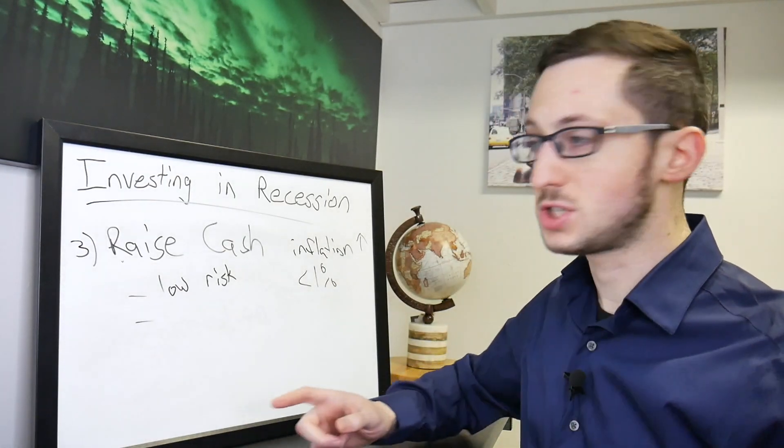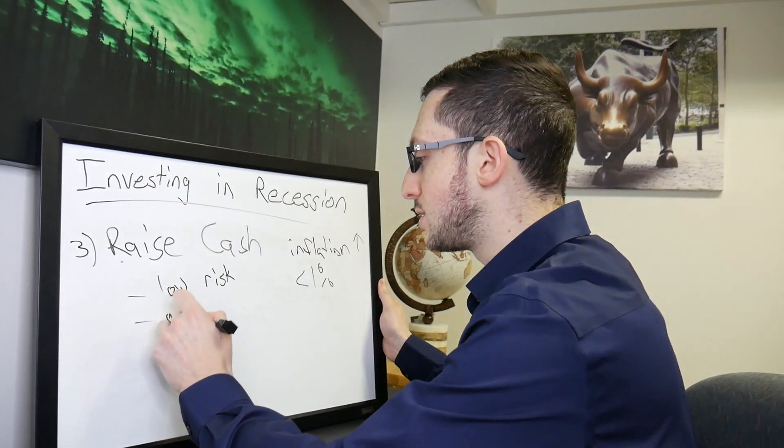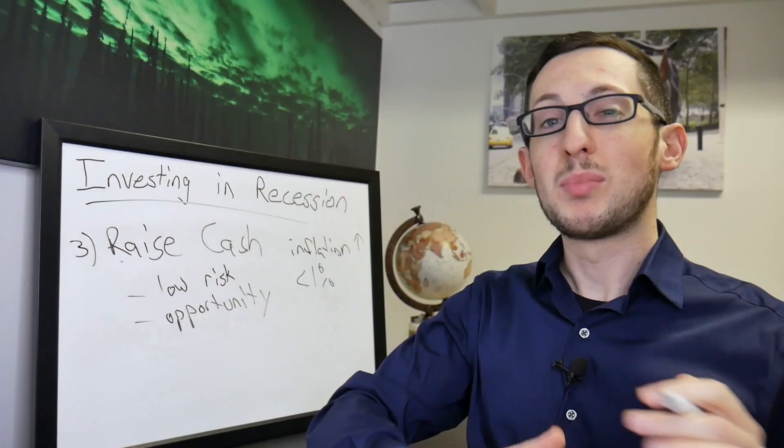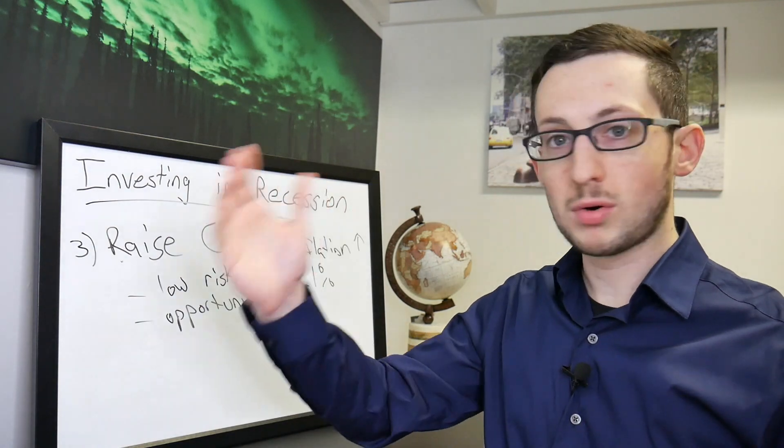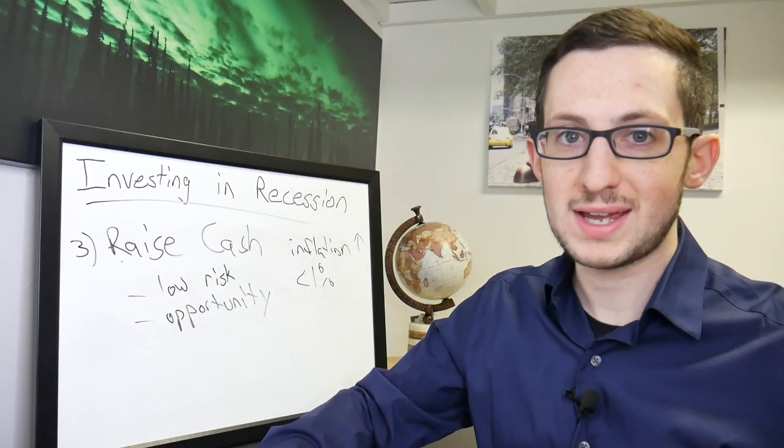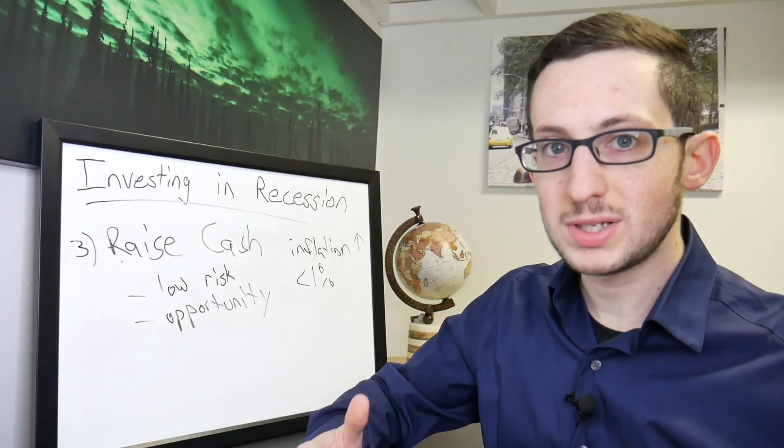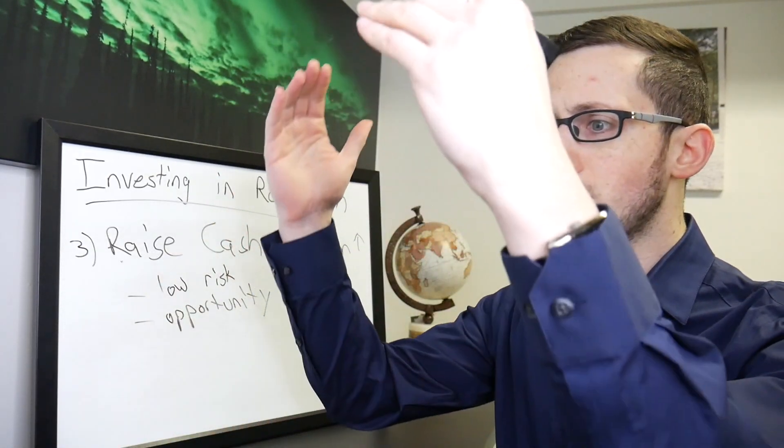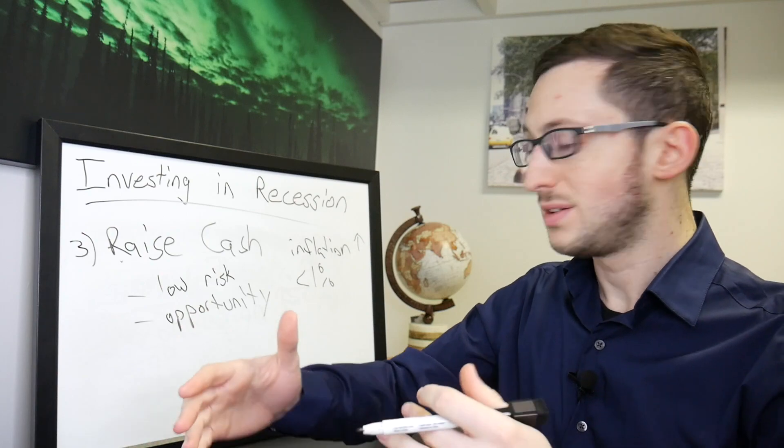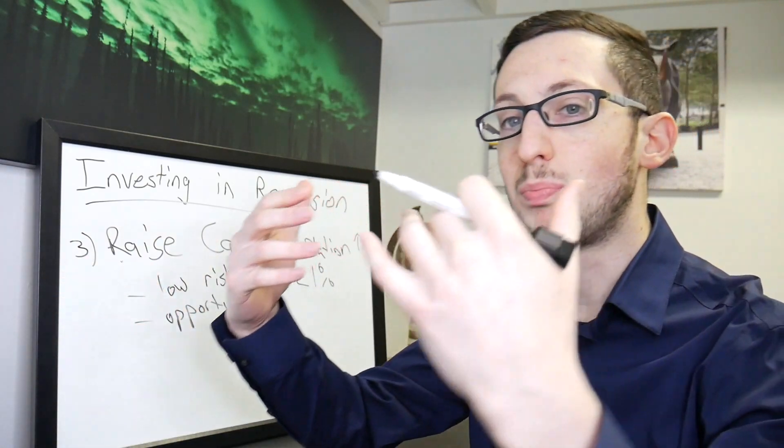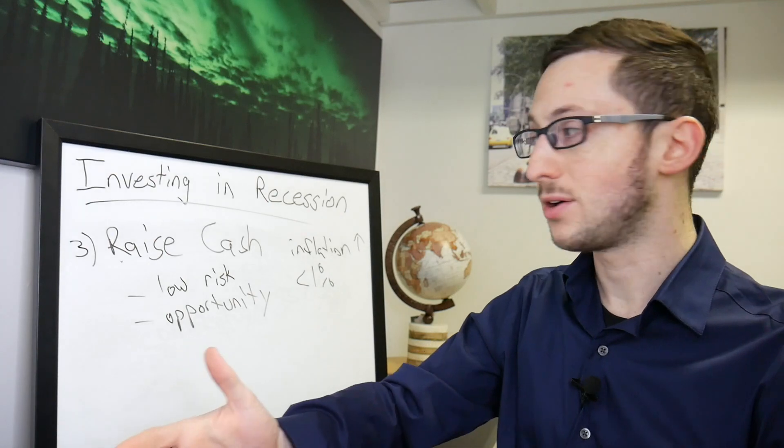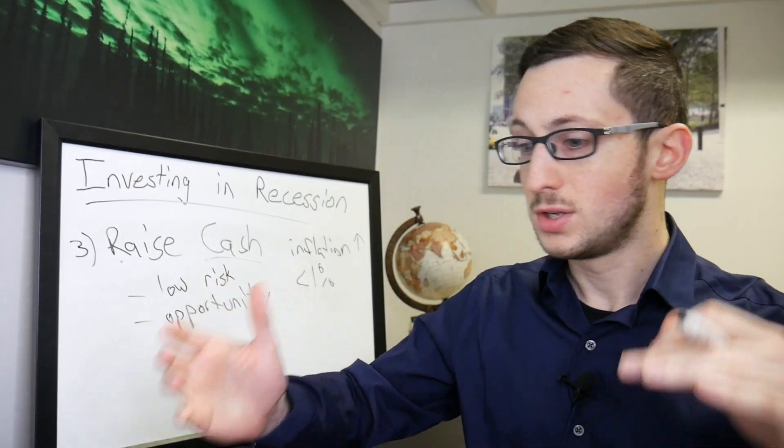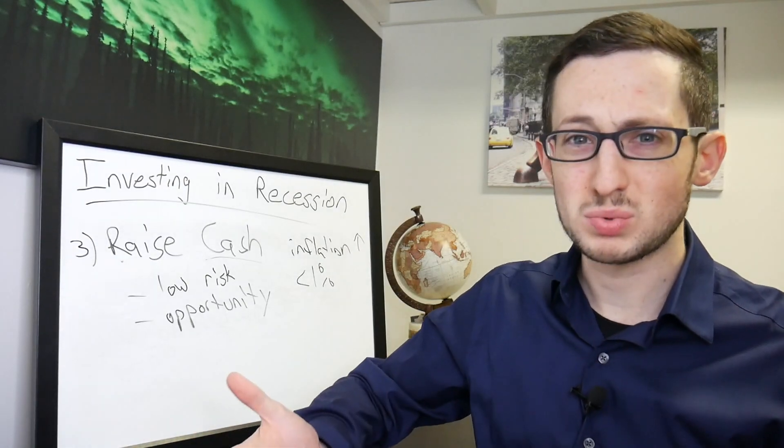However what cash does give you is opportunity. When you have more cash on end, Warren Buffett has a huge pile of cash right now, it gives you opportunity because it's liquid. Maybe there's an opportunity that comes along, maybe something drops, no matter what the asset is and you're able to buy that at a discount. And that's why a lot of people are actually flooding to cash right now due to uncertainty. No one really knows what's going on.